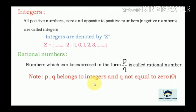Now coming to rational numbers. Numbers which can be expressed in the form of P by Q are called rational numbers, where Q is not equal to 0 — meaning the denominator part should not be 0.